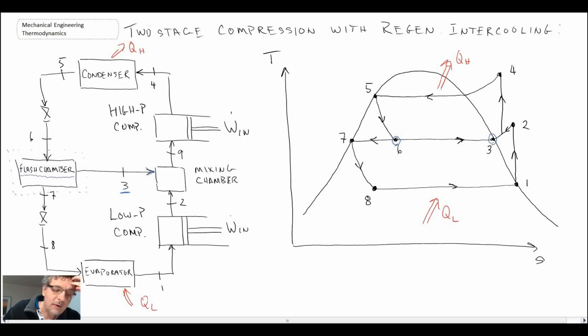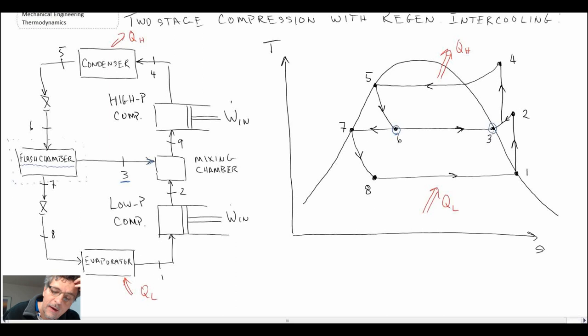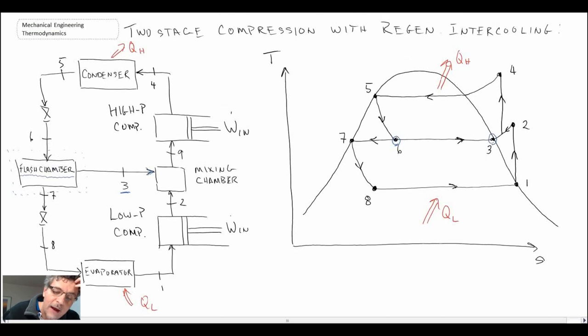The percentage of vapor that is going to 3 is equal to the quality of the refrigerant after the throttling process from 5 to 6. So we can say the percentage going to 3 is x6, and if we say that, the remaining, the liquid, is stripped off, and it goes to state 7 down to 1, or to 8, and then over to 1.